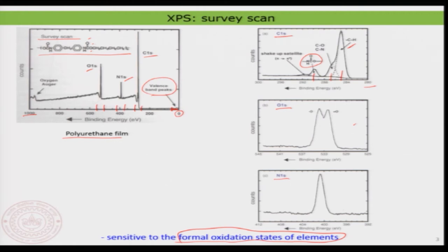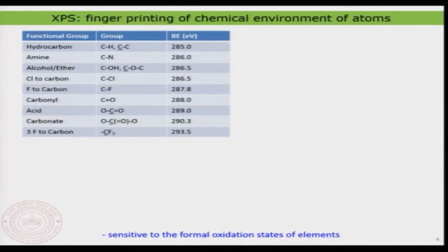Let us understand this in greater detail. This table gives an overview of the typical binding energies of carbon and what happens when carbon is connected to different elements. This is a small guide — of course there are larger tables available in the XPS database online. Typically, for a hydrocarbon, carbon 1s is present at around 285 electron volts.